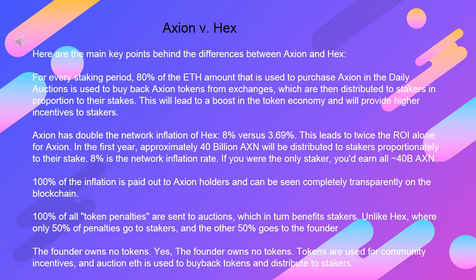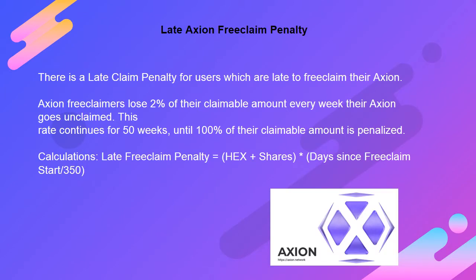100% of all token penalties are sent to auctions, which in turn benefits stakers. Unlike HEX, where only 50% of penalties go to stakers and the other 50% goes to the founder. The founder owns no tokens — yes, the founder owns no tokens. Tokens are used for community incentives, and auction ETH is used to buy back tokens and distribute to stakers.